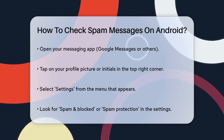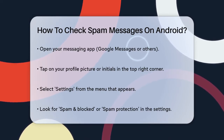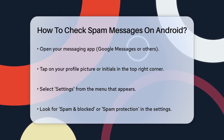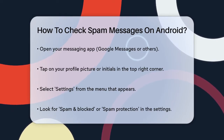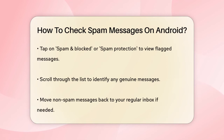Once you're in the app, look for your profile picture or initials at the top right corner. Tap on that. Now you'll see a menu with several options. Select Settings from this menu. In the settings, find the option that says Spam and Blocked or Spam Protection.